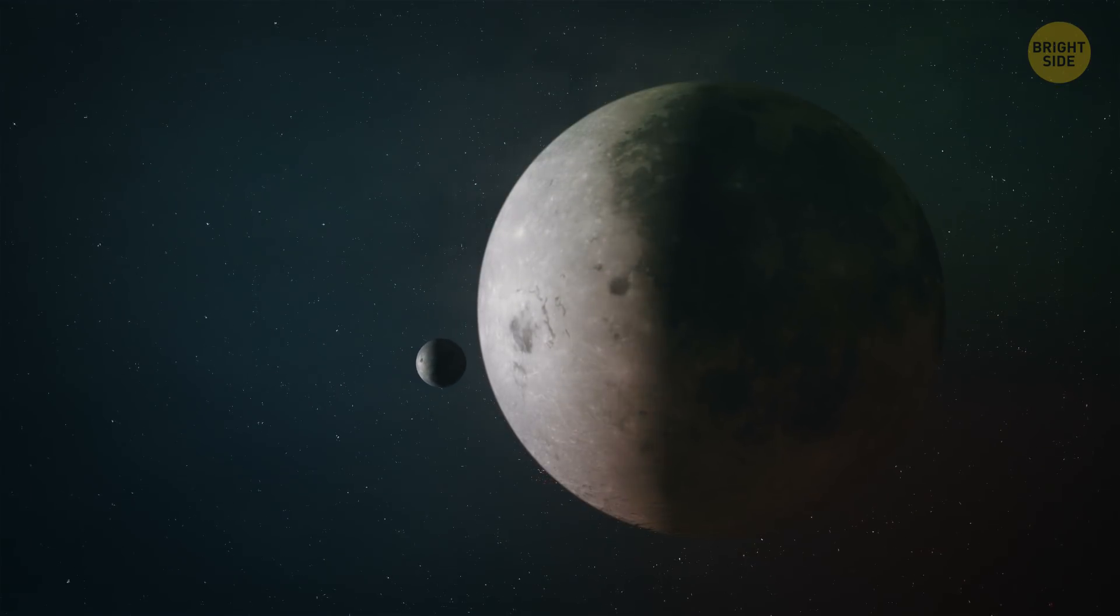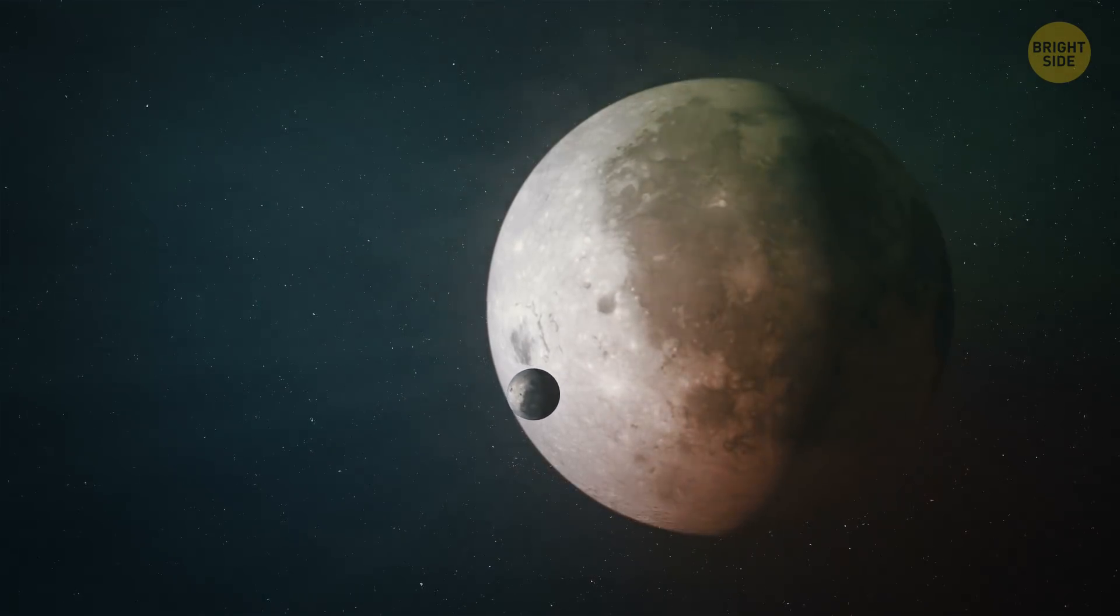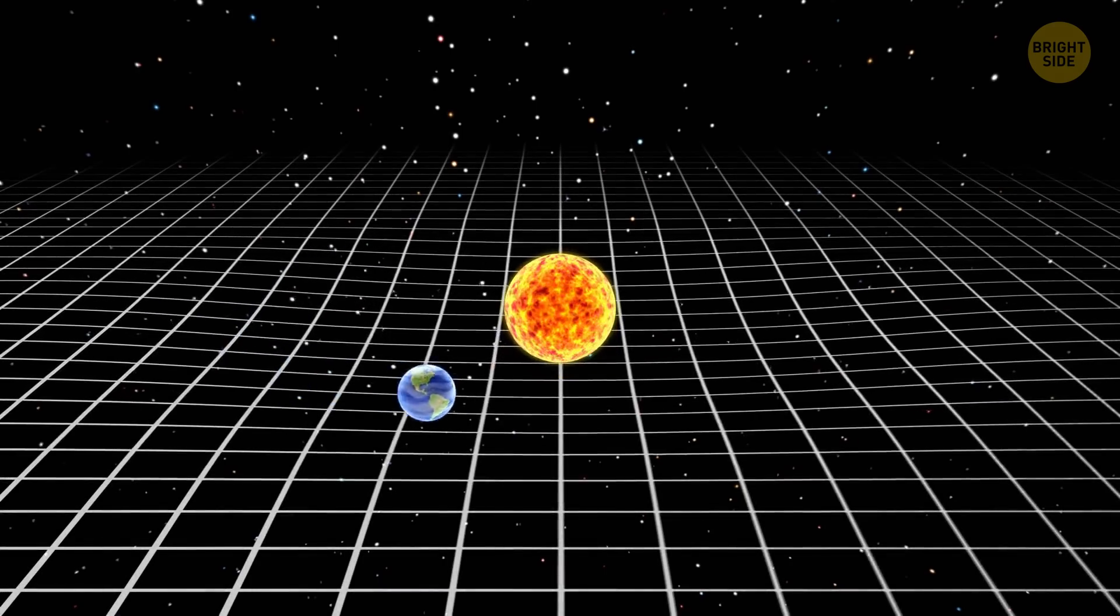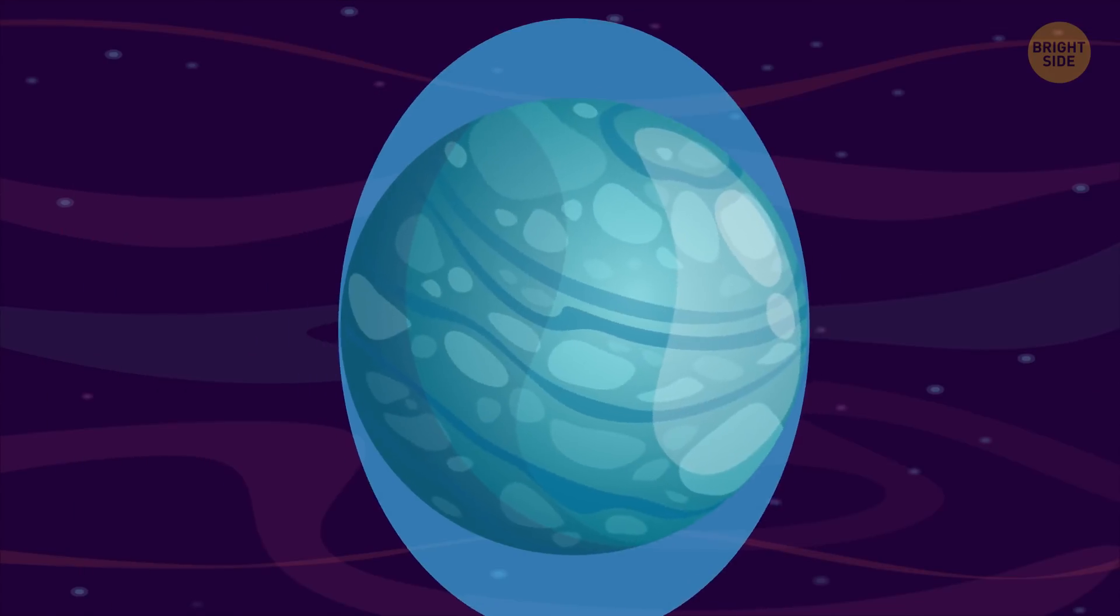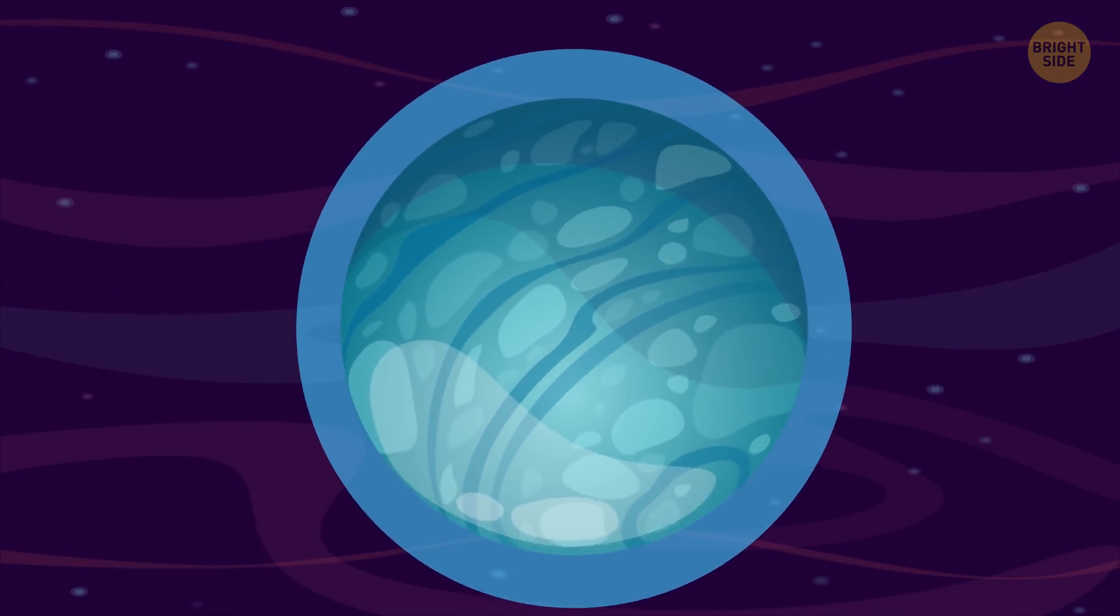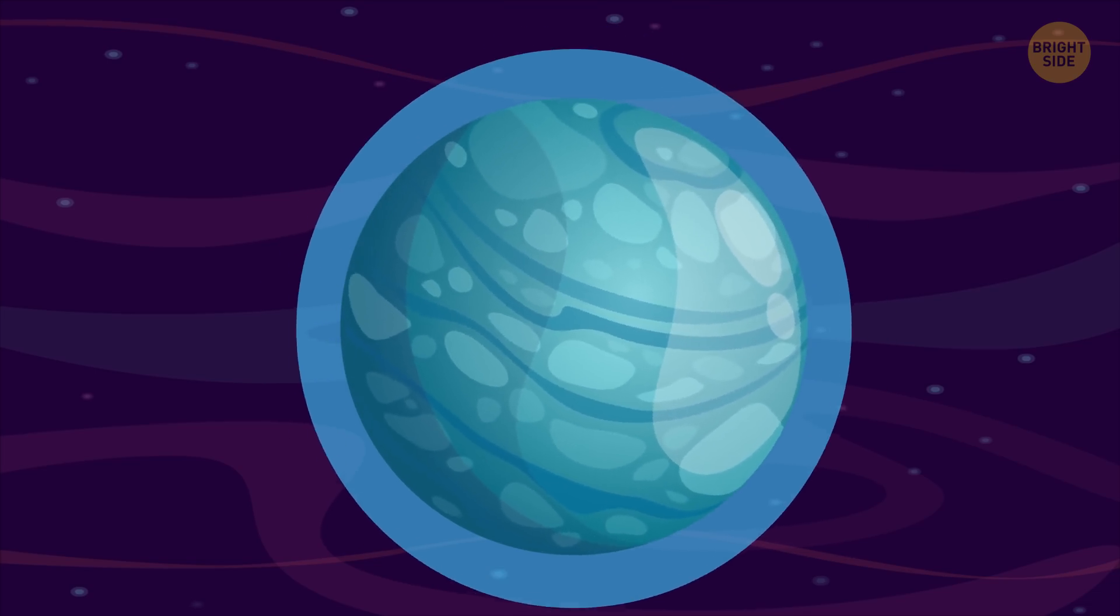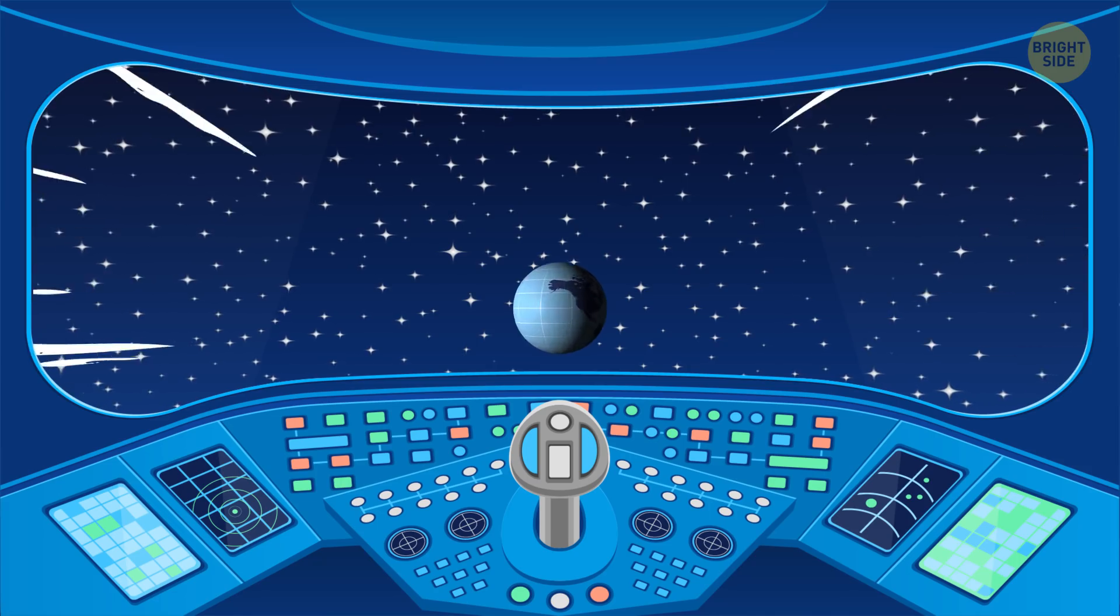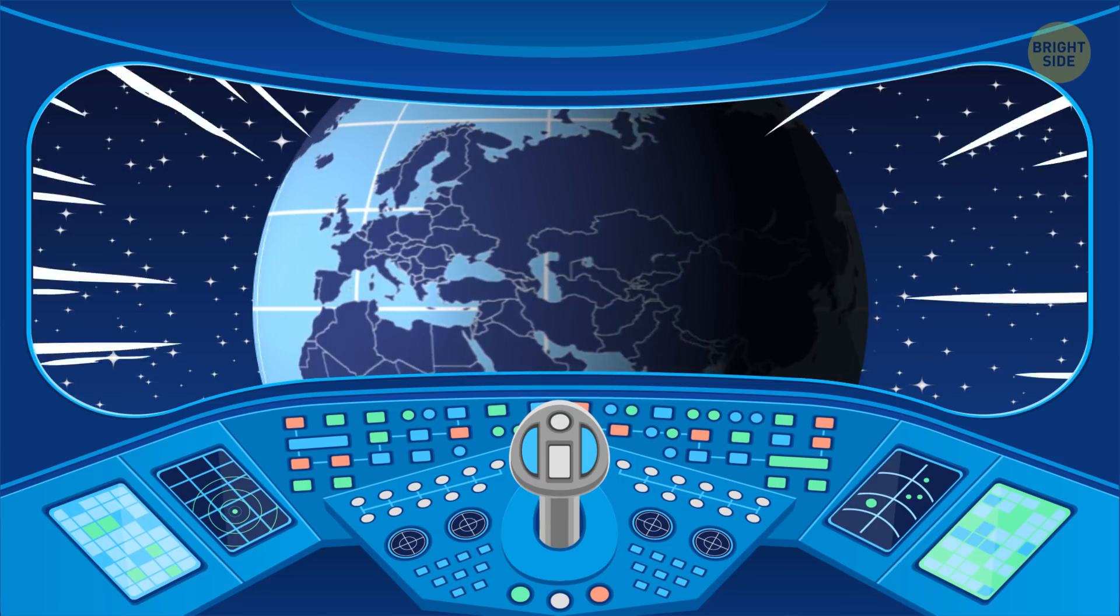That much bulk would also give GJ357d a vastly higher gravity than is found on Earth. This would no doubt have a profound effect on any life that happens to evolve there, shaping it in ways we can only imagine. This high gravity also creates a unique problem that any intelligent life would eventually encounter.